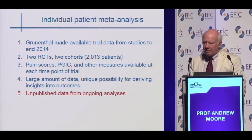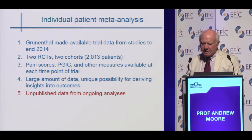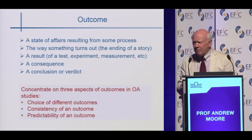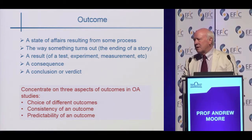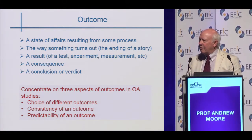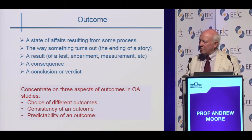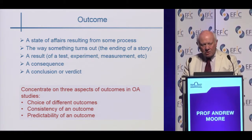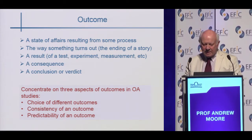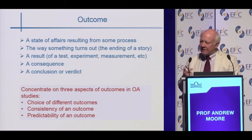I'm going to show you now some unpublished data from the ongoing analyses. Anybody who's followed me around this meeting will know that I'm fixated by outcomes. The reason is very simply that it is the most important thing we have. If we know what the right outcome is and how those are obtained, then we can interpret the results of trials properly. I want to concentrate on three different aspects of outcomes in OA studies: the choice of different outcomes, the consistency of an outcome, and whether there is any predictability of an outcome.